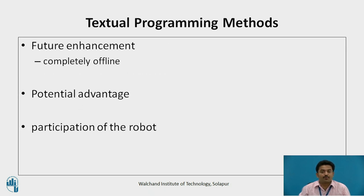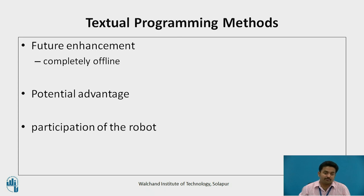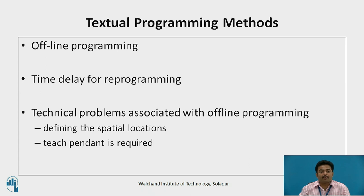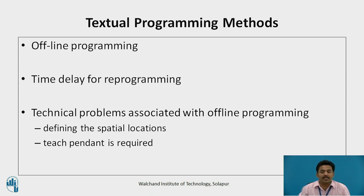Future enhancement of textual language programming will be to enter the program completely offline without the need for a teach pendant to define point locations. The potential advantage of this method is that programming can be accomplished without taking the robot out of production. All current methods of programming require the participation of the robot in order to perform the programming function. With offline programming, the entire program can be entered into a computer for later downloading to the robot, allowing changeover from one work cycle to a new work cycle without a major time delay for reprogramming. Unfortunately, there are certain technical problems associated with offline programming, mainly concerned with defining the spatial location of positions used in the work cycle, which is why the teach pendant is still required in today's textual robot languages.